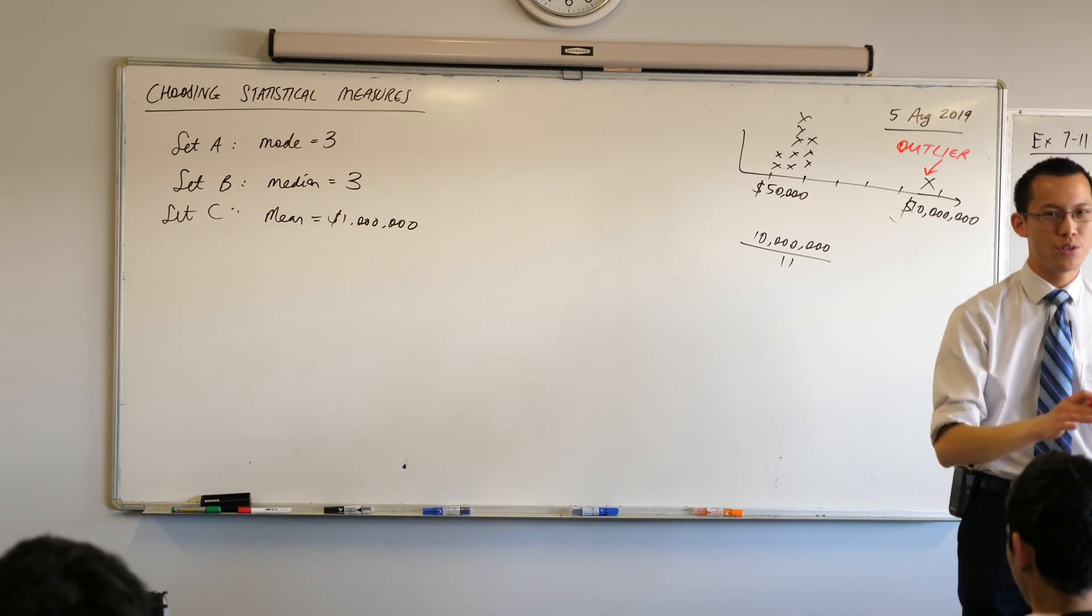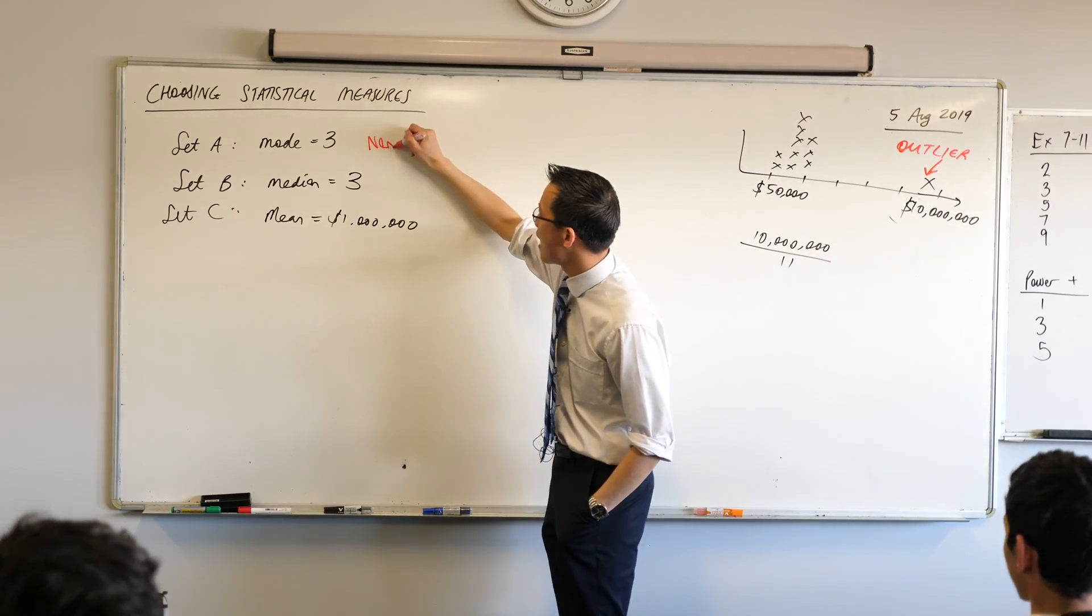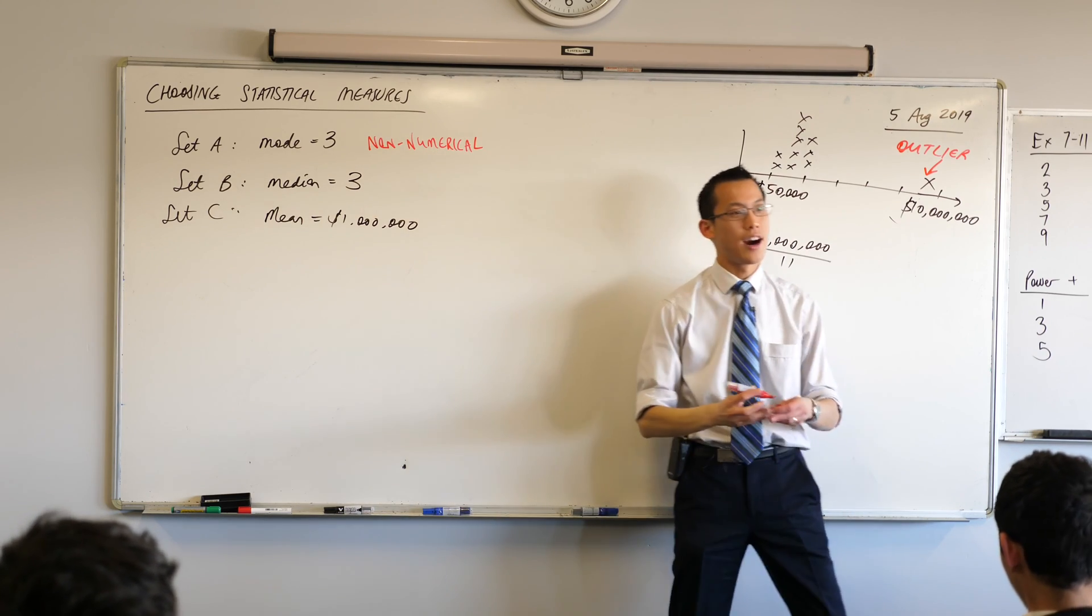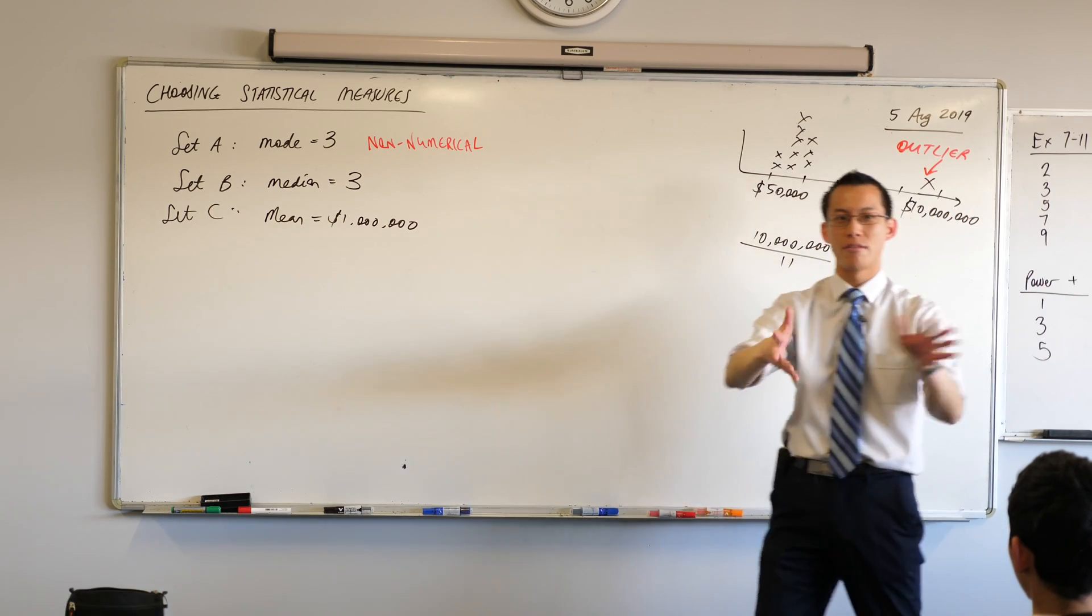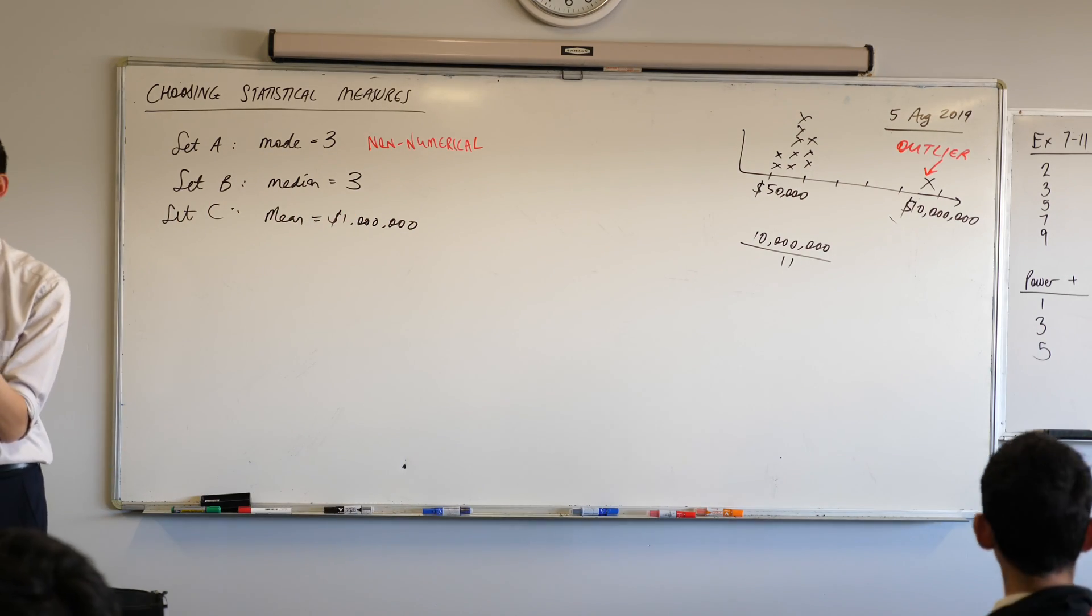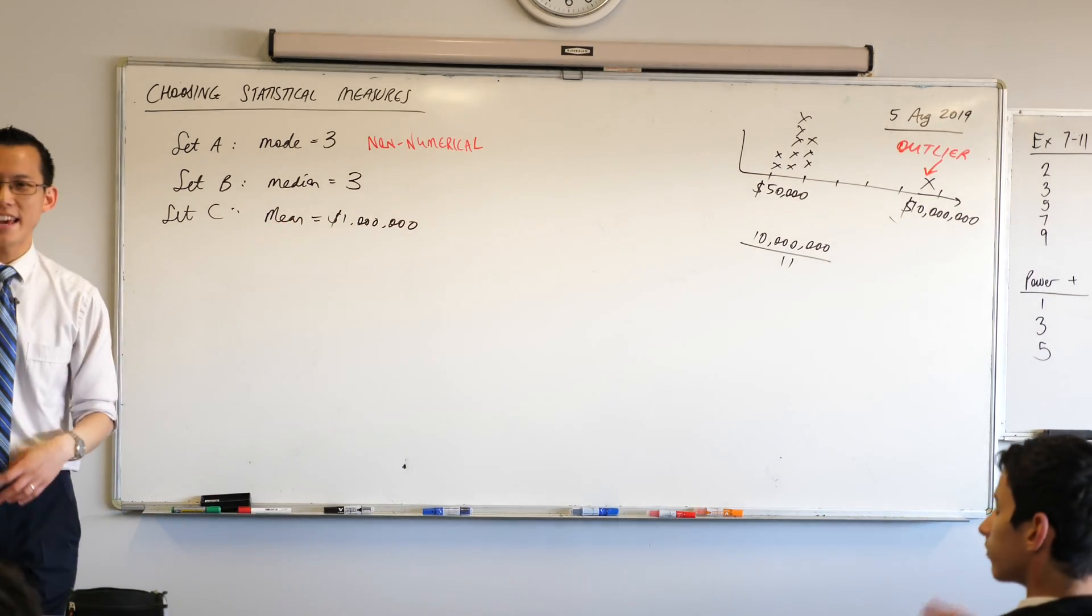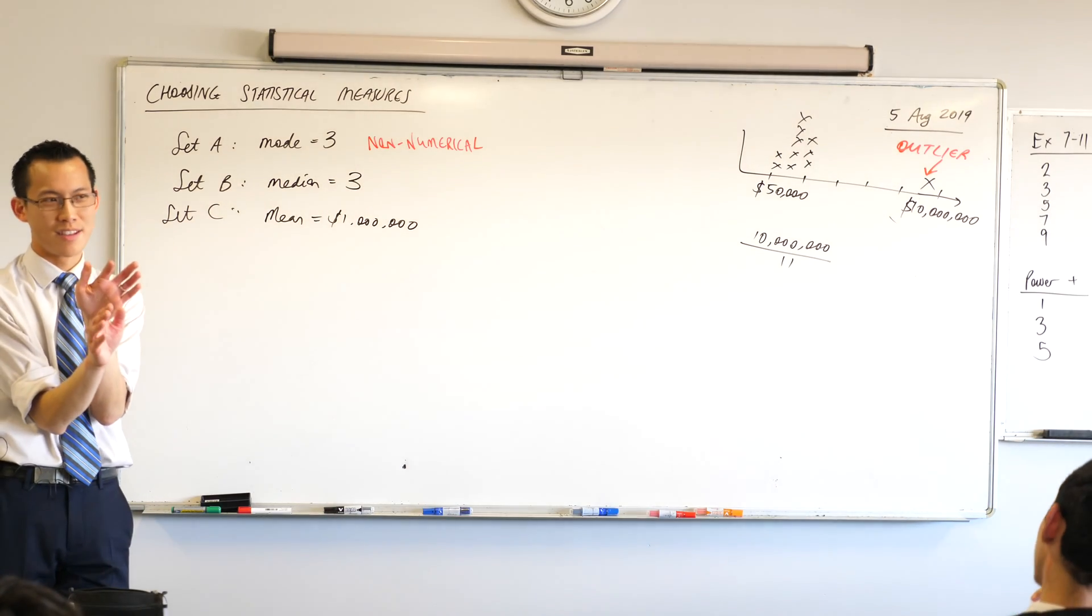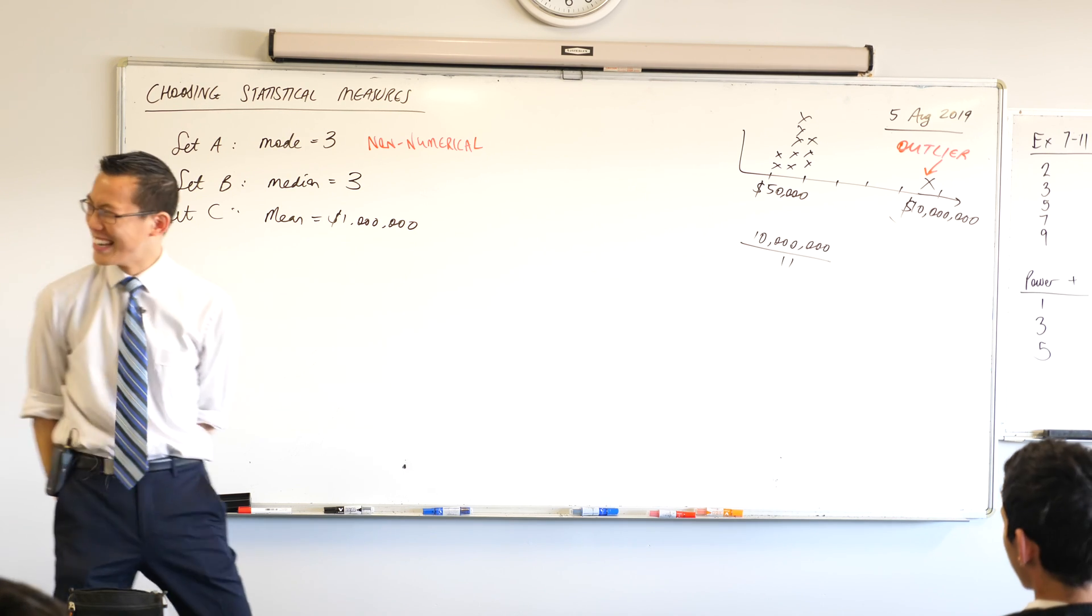Last thing I'd like you to write down. The main time when we use the mode, you can write it up here next to set A, is when data is, well, when it can't be counted or it can't be calculated on. You don't have numbers there when you've got a genre of music or if I ask for what's the most common eye color. You can't take a calculation to that. Well, if I said, like, blue and brown, like what's halfway between those, that would be a whole different color in between except for Mrs. Lee's who is both and that's cheating.